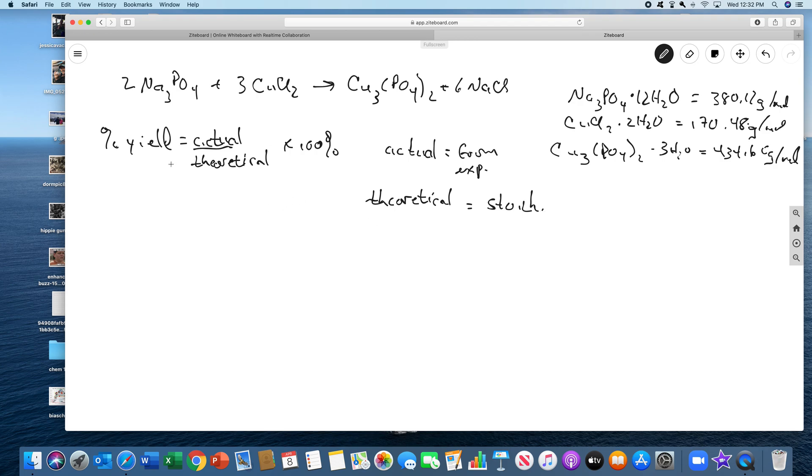I'm going to go through some sample calculations with data that I'm making up, so the numbers I'm using are not the same numbers you're going to use. Let's say in part A that you weighed out 0.9974 grams of sodium phosphate and 1.0216 grams of copper chloride. And when you were done, you actually got 0.5554 grams of the copper phosphate. This is your actual yield.